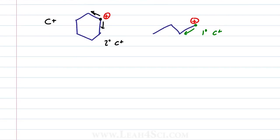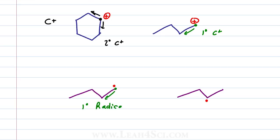The same trick applies to radicals. The molecule on the left has a radical at the end — if we put the pencil down, one line, one bond to carbon, making this a primary radical. The molecule on the right, when you put the pencil down, has two lines coming out of it, meaning two bonds to carbon, making it a secondary radical.